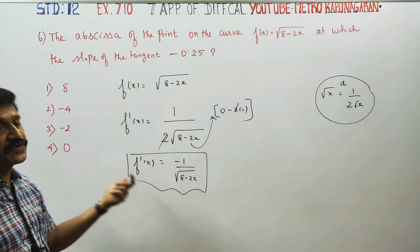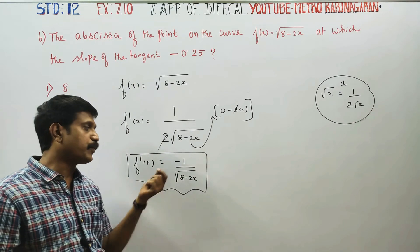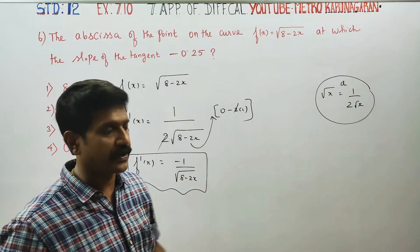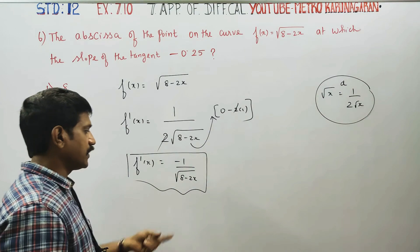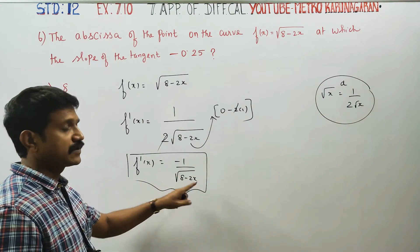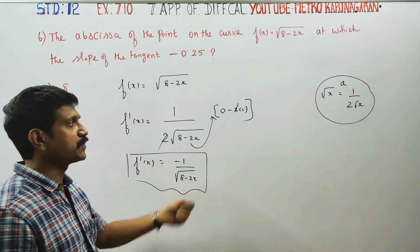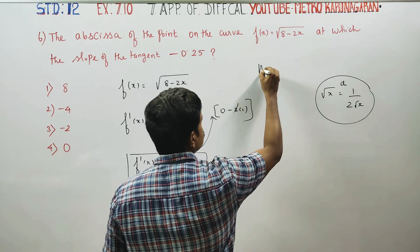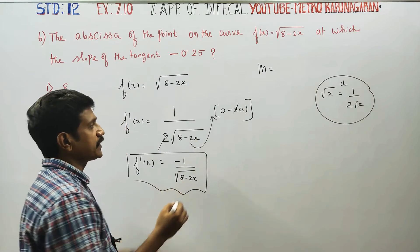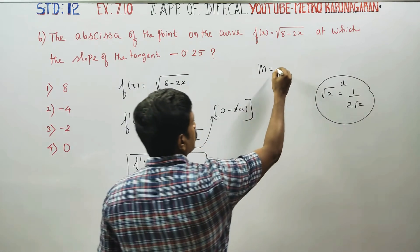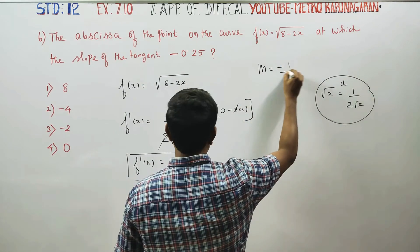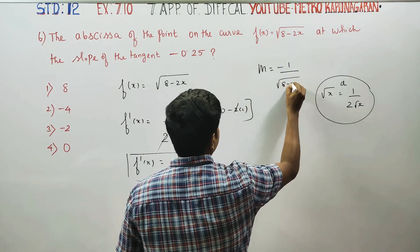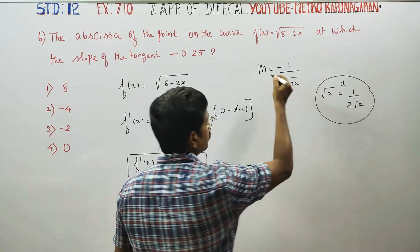After differentiating and simplifying, we get the slope. Here, the slope is equal to minus 1 by root of 8 minus 2x.